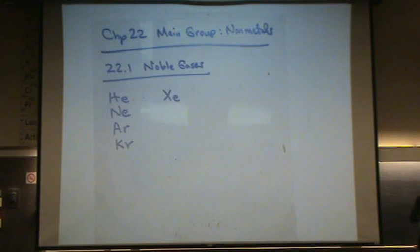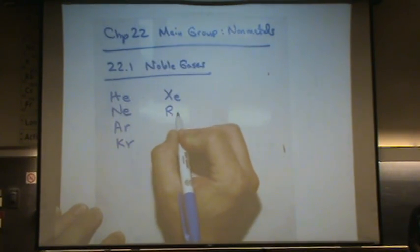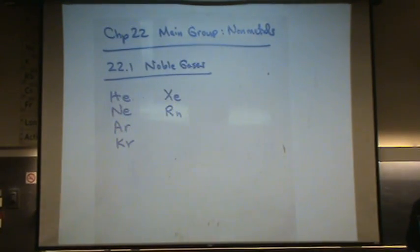Xenon. Halogen lamps have xenon in them. Flash tubes. It's inert like the rest of these. Radon. This is also a product of radioactive processes. It's found deep in the earth.